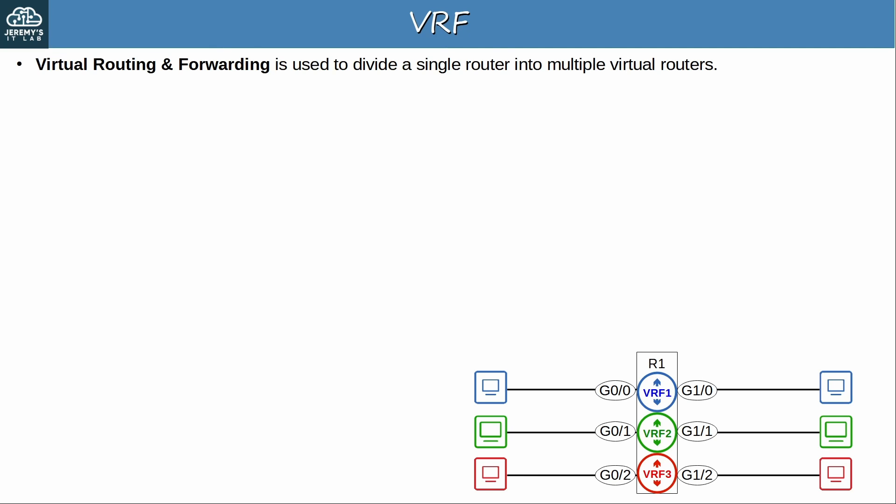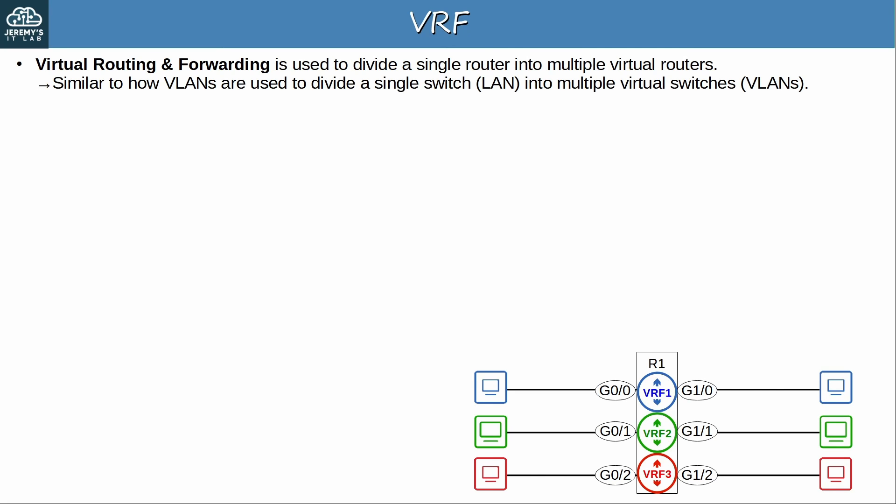Virtual routing and forwarding is used to divide a single router into multiple virtual routers. This is similar to how VLANs are used to divide a single switch into multiple virtual switches — virtual LANs. By default, all interfaces on a switch are in the same LAN, the same broadcast domain. When using VLANs, we can divide that one broadcast domain into multiple virtual broadcast domains.